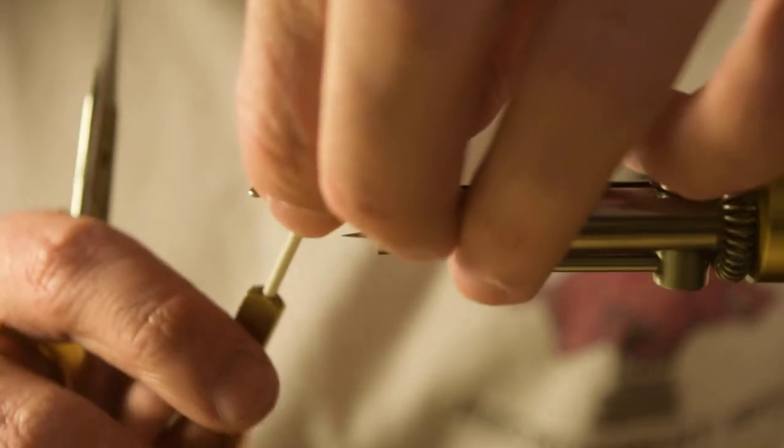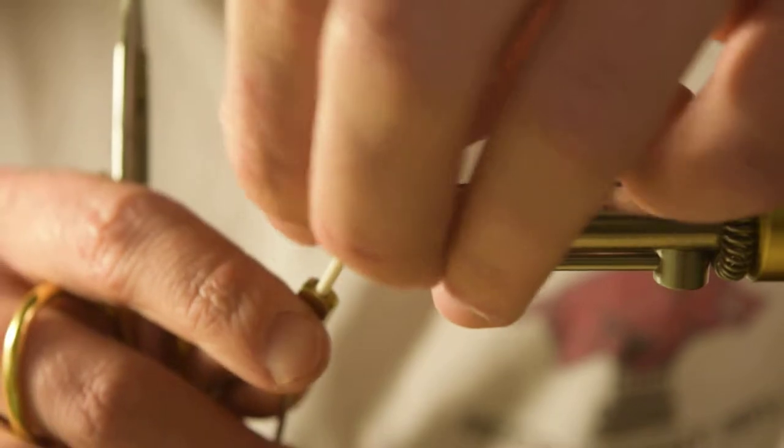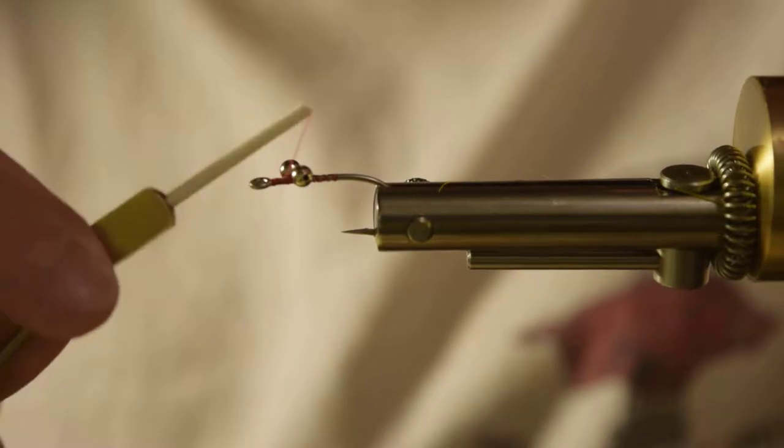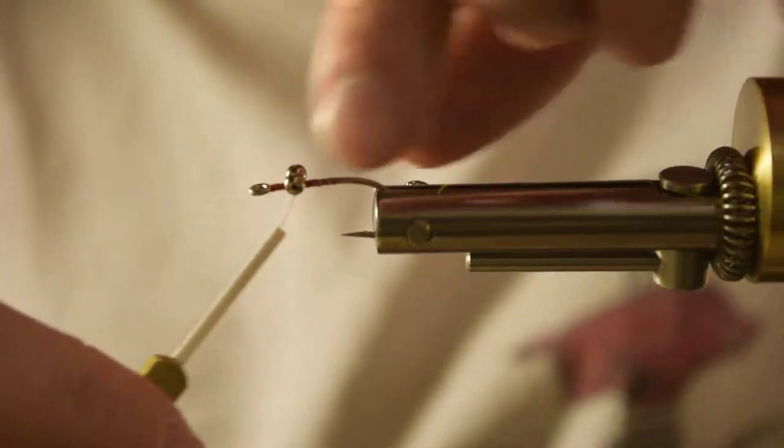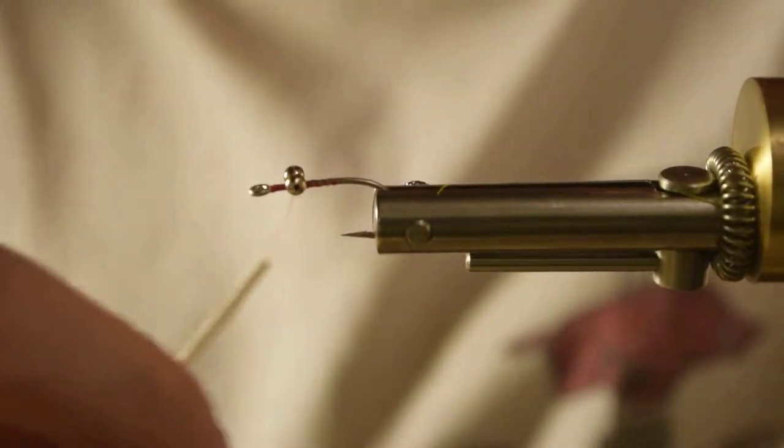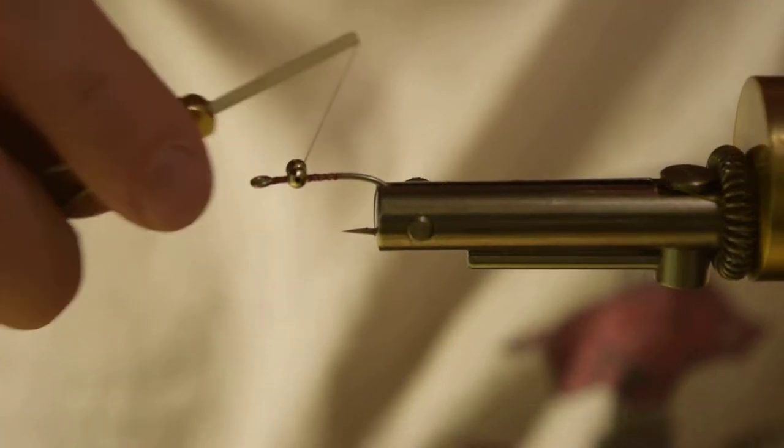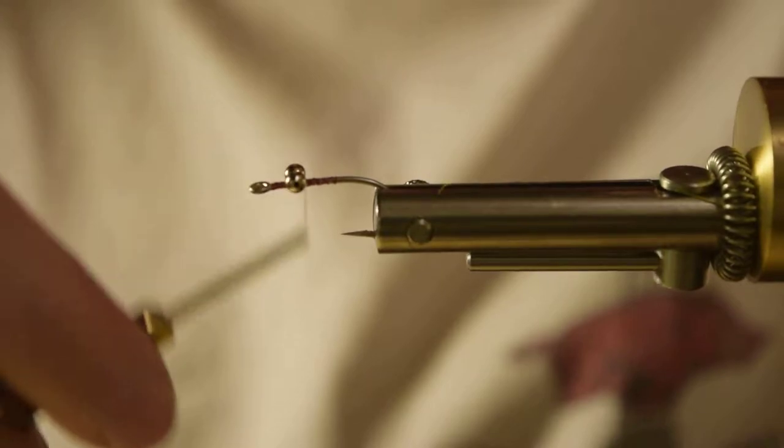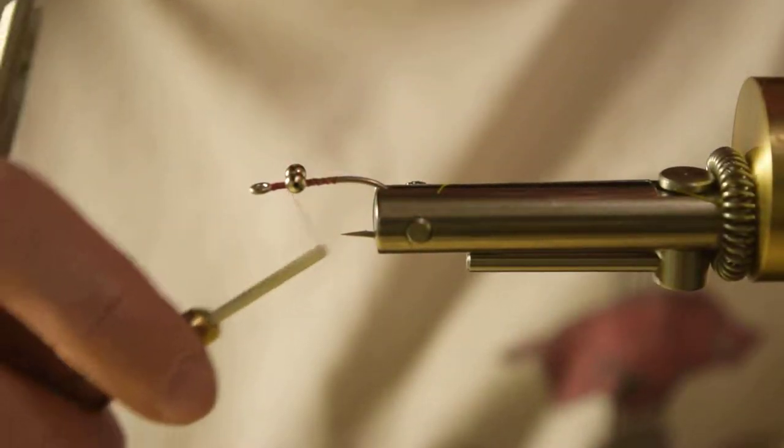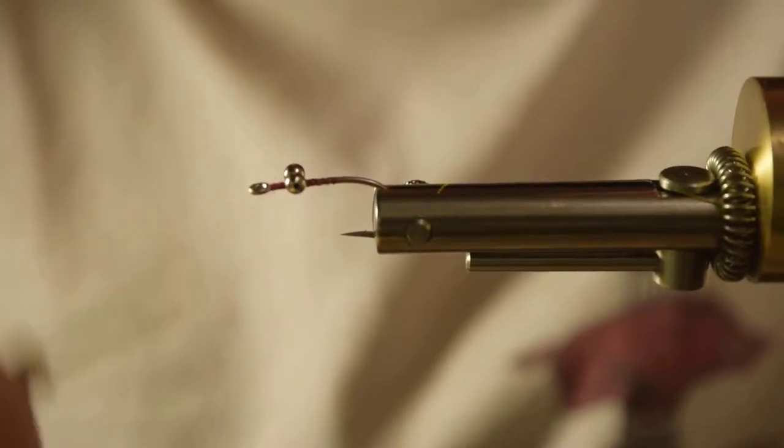We're going to attach our eyes using some X-wraps. I'm going to make a couple wraps that direction and switch a couple wraps this direction. One more time the other way, one more time. And now I'm going to come around the base of them, on top of the hook but under the eyes. And that just tightens up those previous wraps.